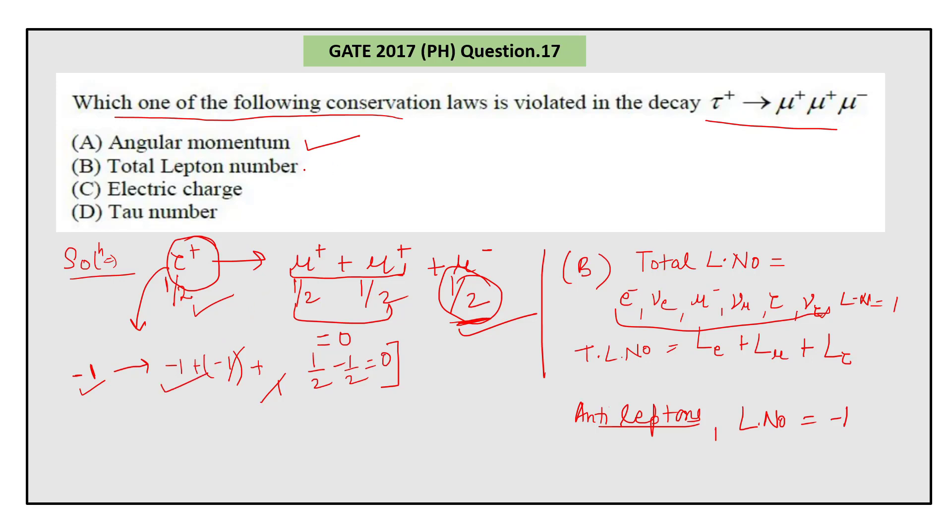Electric charge is also conserved. From this we can see the electric charge is conserved—this gives zero, and this is positive and this is positive. So the only thing is option D, tau number, which is violating.